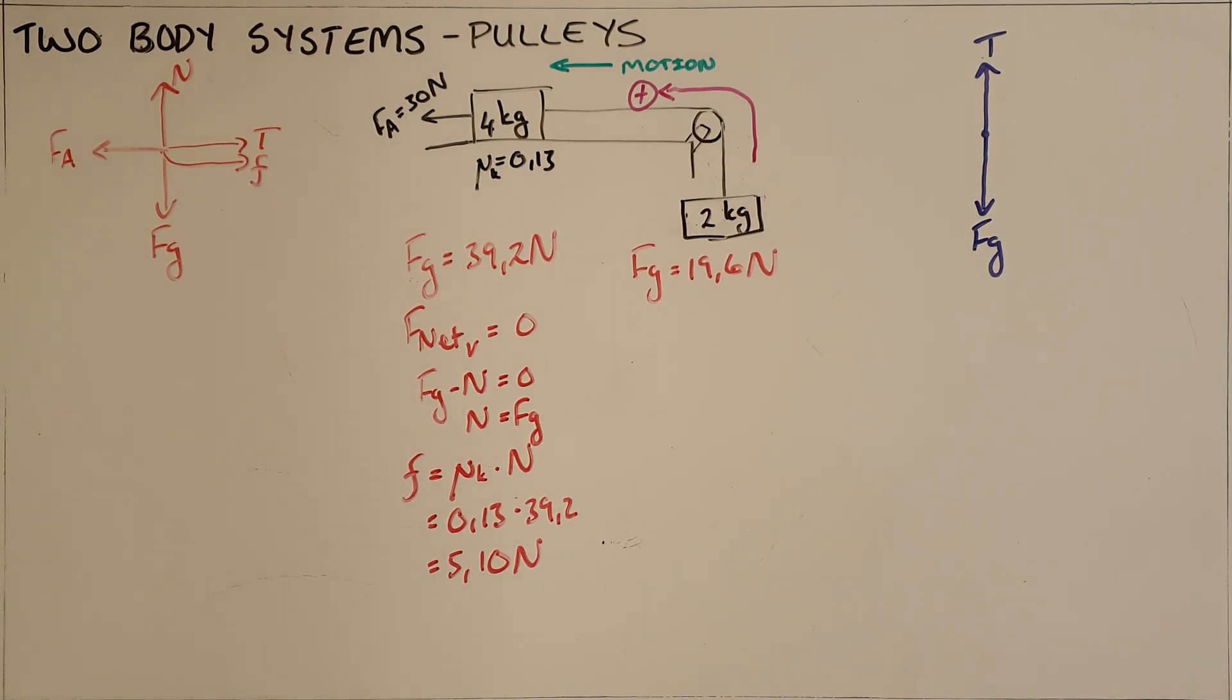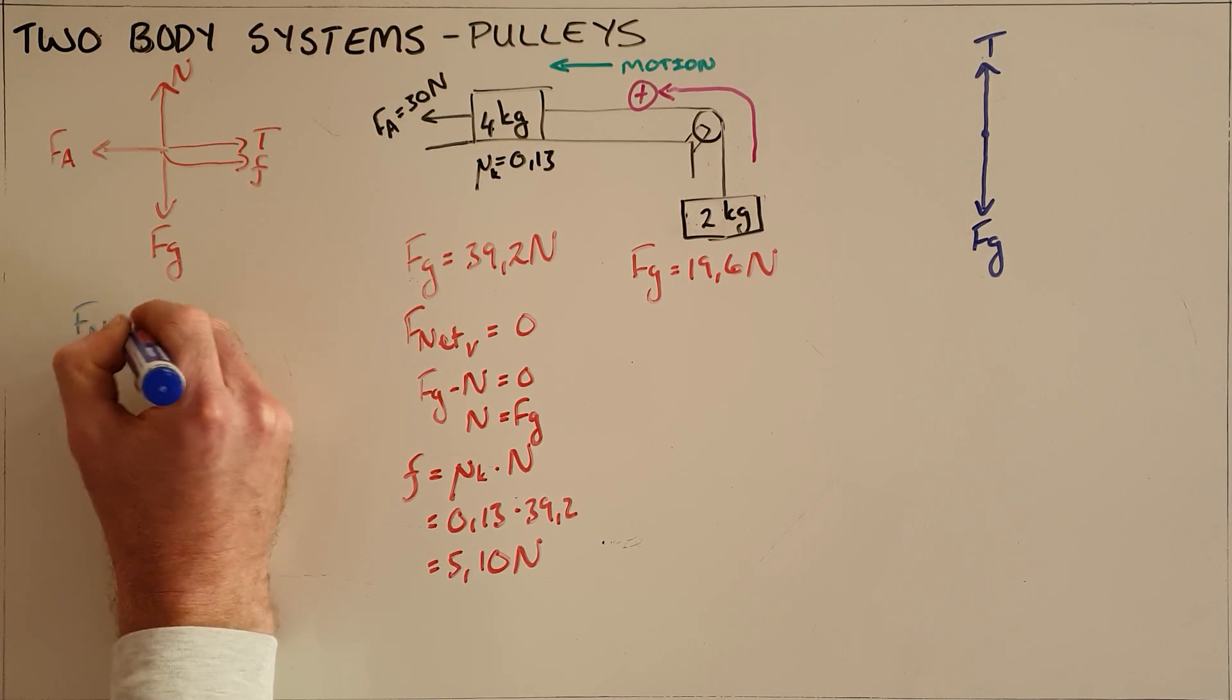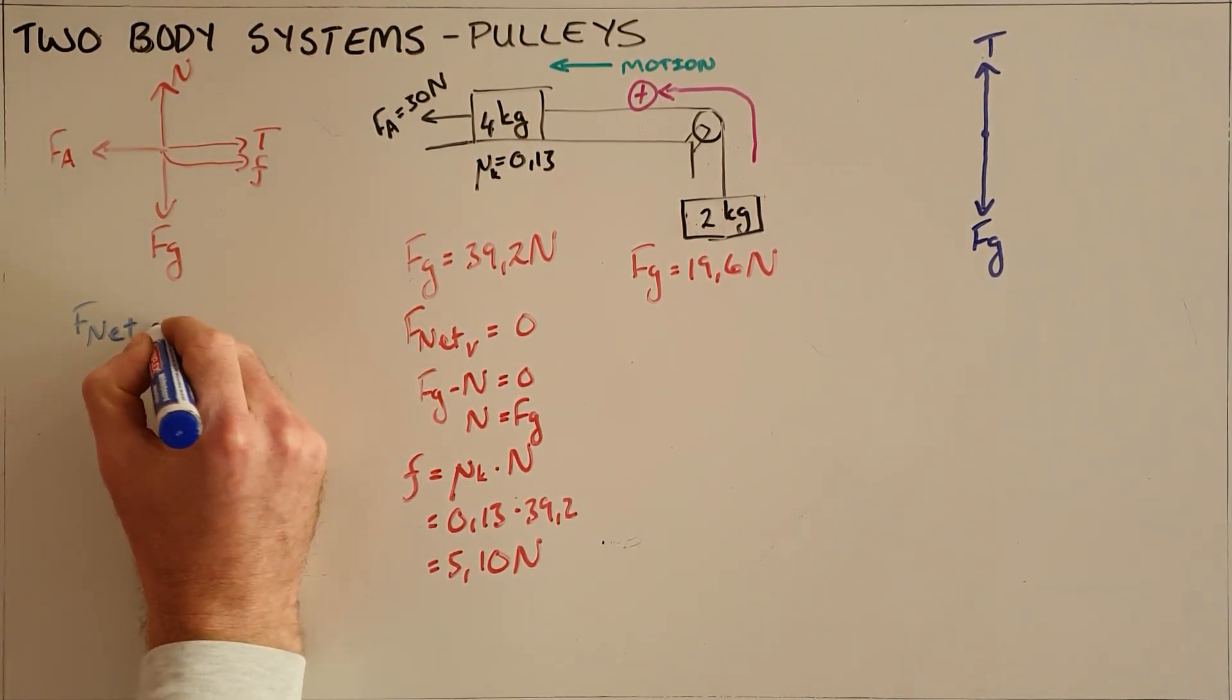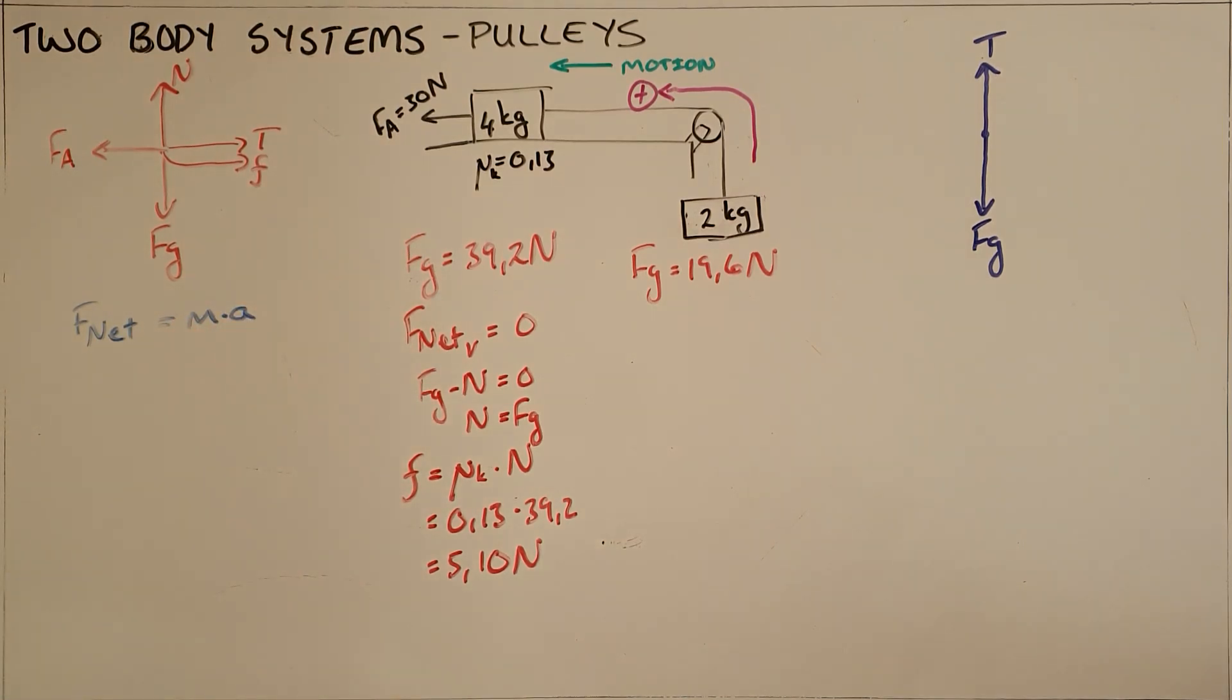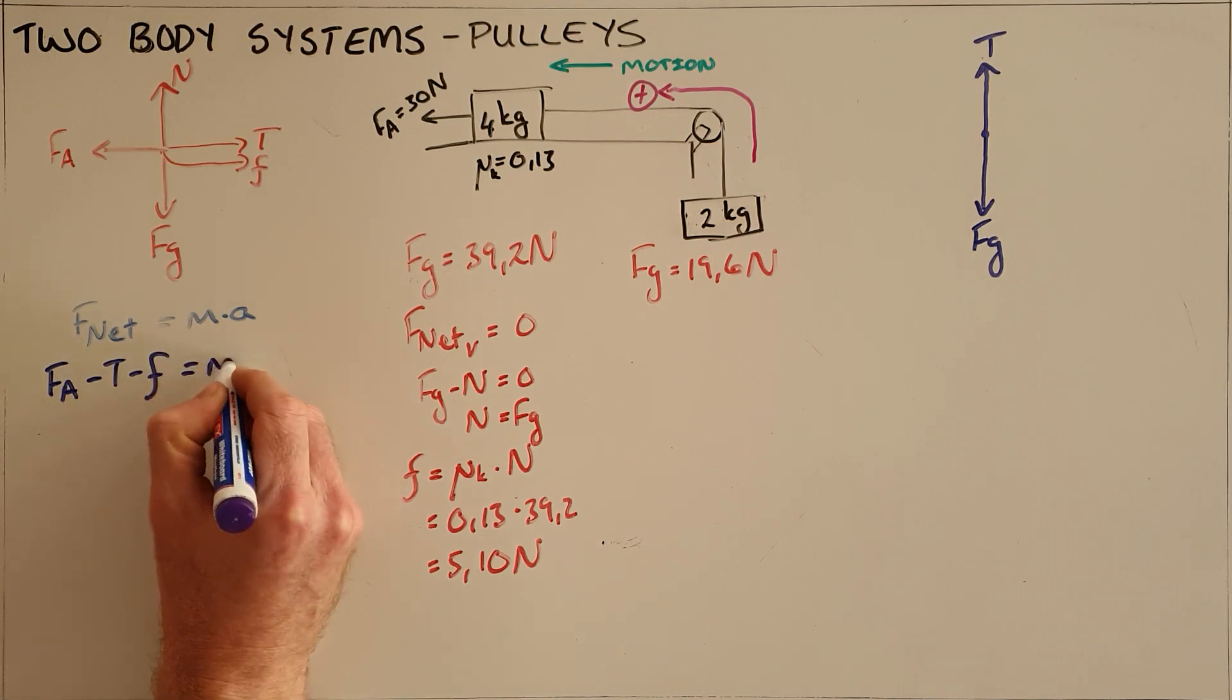Our next step is to write a Newton's second law expression for each one of these objects, where we can use the free body diagram to assist us. There's one force acting to the left, the applied force, minus the two forces acting to the right, those being tension and friction. Those are equal to the object's mass multiplied by its acceleration.